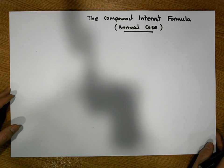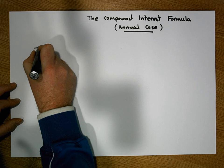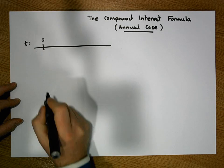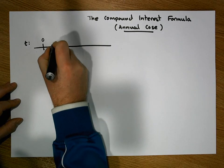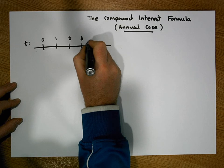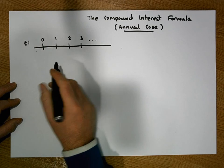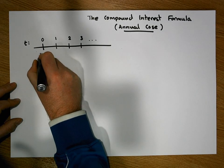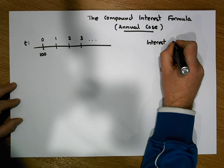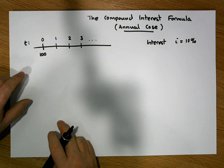Before we get to the derivation of the formula, let's just have a look at the application of compound interest from a particular perspective. Let's do a timeline where t represents time: zero indicating today, one indicating one year has elapsed, two that two years has elapsed, three that three years has elapsed, and so on. Let's assume we place a principal investment of 100 euros in the account today and assume interest rate i is 10 percent.